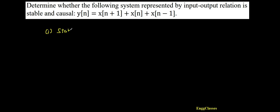Let me consider testing this system for the first condition, that is stability. To test this system for stability, we should know the condition. For any system to be stable, the condition is: every bounded input must result in a bounded output. We will make the input finite and check if the output is also going to be finite. If yes, the system is stable; otherwise, it is unstable.